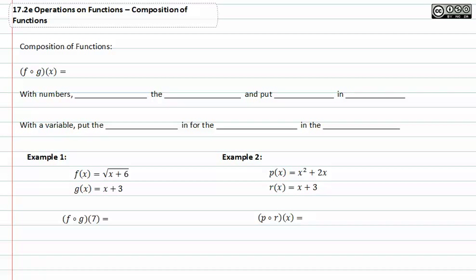When we have a composition of functions, that means we have functions inside functions. Another way of writing this is f composed with g, which you can write as f circle g. All this means is you take the g function and you put it inside the f function.